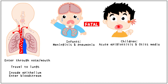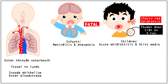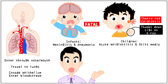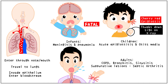Its characteristic findings are a cherry red colour of the epiglottis and a thumb sign on the x-ray. In adults, it causes COPD, bronchitis and sinusitis along with suppurative lesions such as septic arthritis, most of which are again localised.